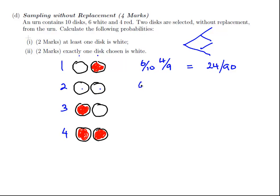A white and a white, 6 out of 10. Now, once you've taken out the first one, there's only 5 left out of 9. So, it's 5 out of 9. And the probability of that is 30 divided by 90.